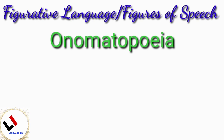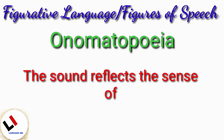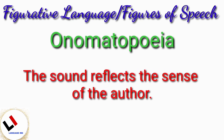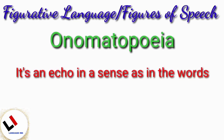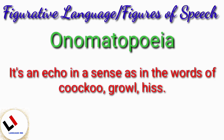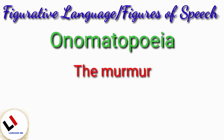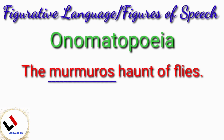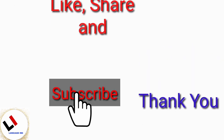Onomatopoeia. Onomatopoeia is a figure of speech in which the sound reflects the sense of the word — it is an echo in words, as in: cuckoo, growl, hiss. In a sentence: the murmurous haunt of flies on summer eves.